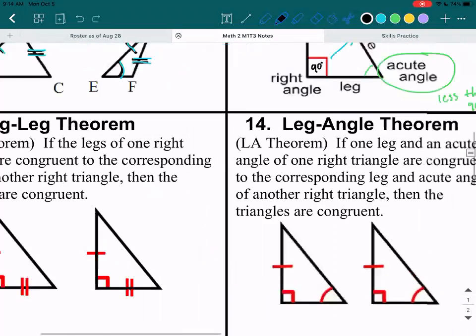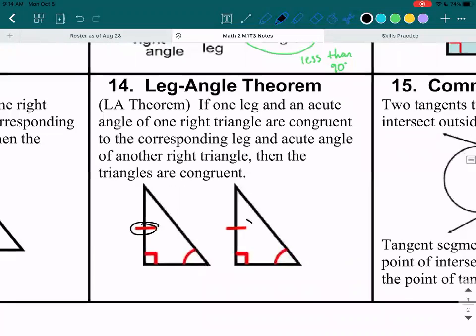There's also leg angle. So if you got one leg and one angle and they have to be the same spot. Okay, so like they have to be in corresponding places. Then if you have the leg angle theorem, then they are congruent as well.